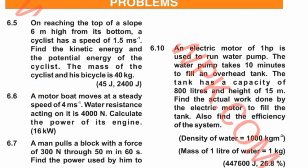Now come to numerical number 6.6. A motorboat moves at a steady speed of 4 meters per second. Water resistance acting on it is 4000 newtons. Calculate the power of its engine.